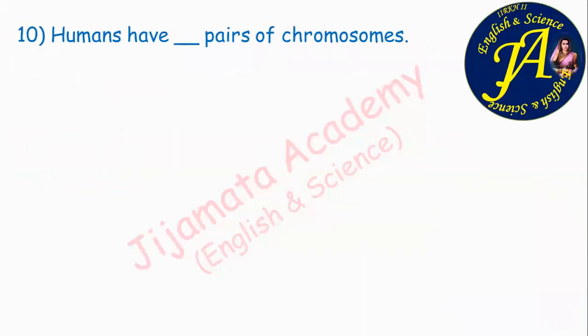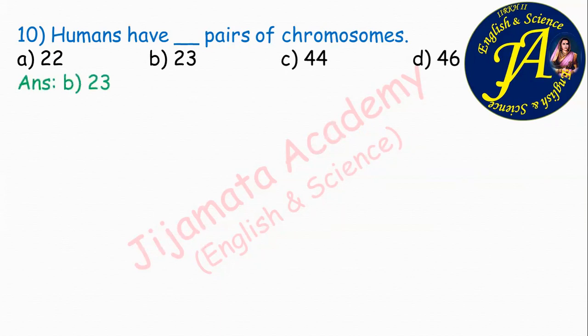Humans have dash pairs of chromosomes. Options are 22, 23, 44, 46. The correct option is option B: we have 23 pairs of chromosomes.